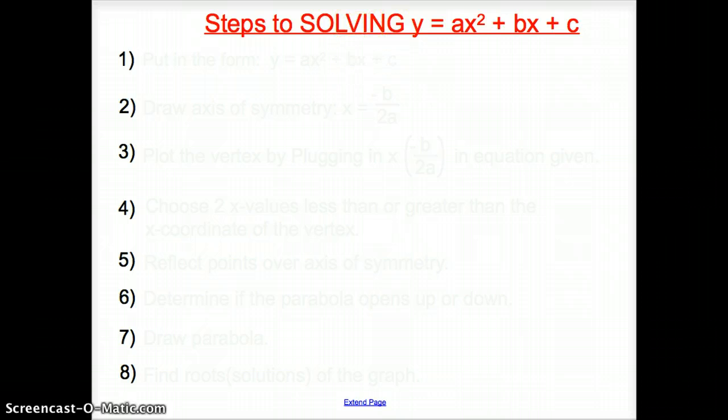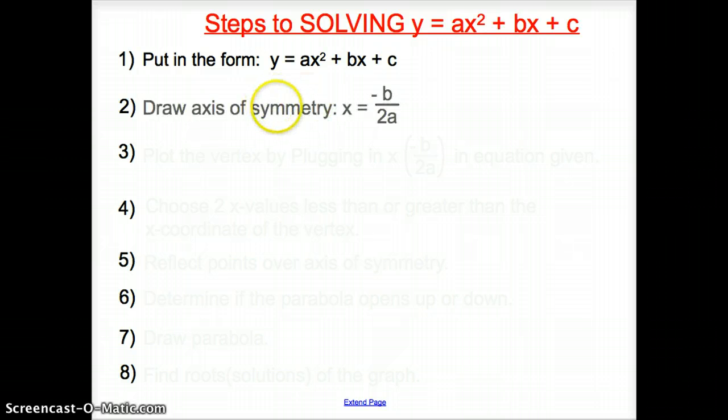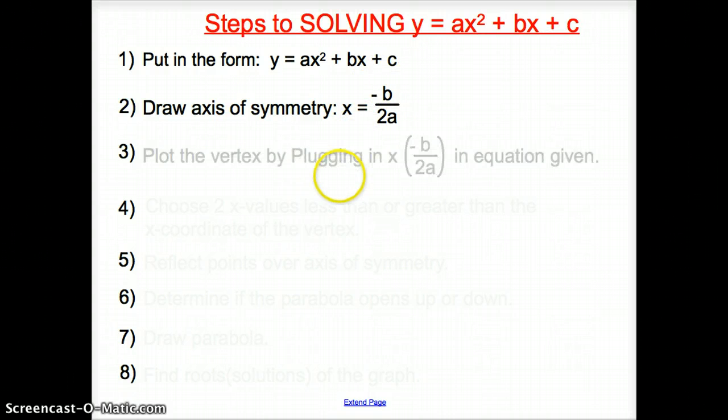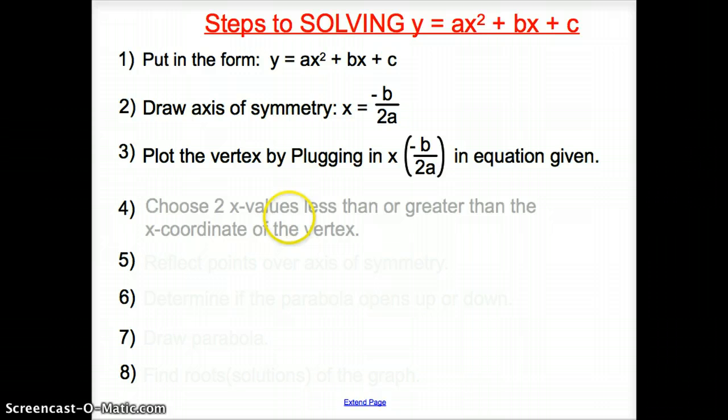Now, what were the steps that we used to solve y equals ax squared plus bx plus c, our quadratic equation? Well, the first step was we put it in this form. We put it in ax squared plus bx plus c. Make sure you get it in that form first. Then you draw your axis symmetry, which is negative b over 2a.